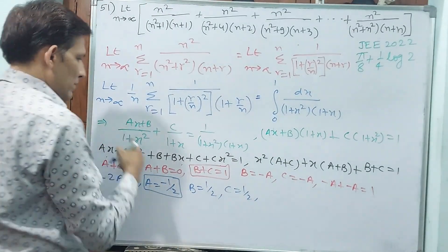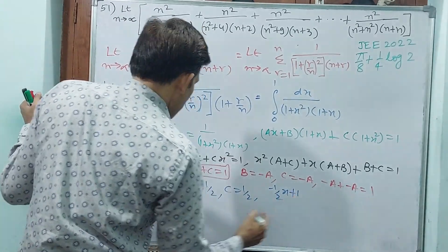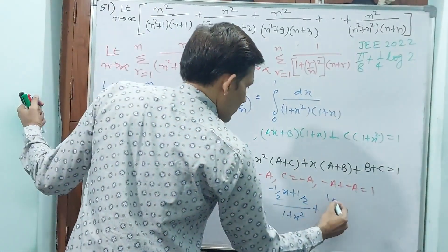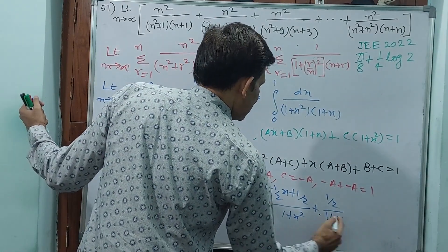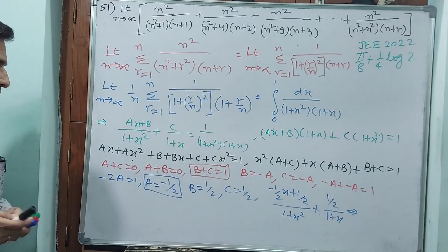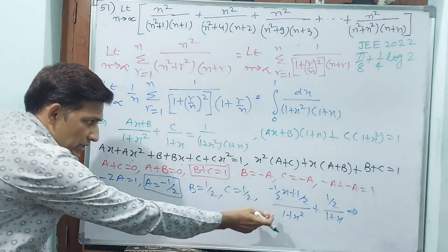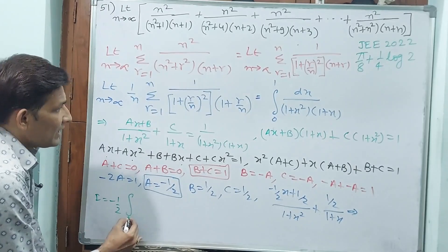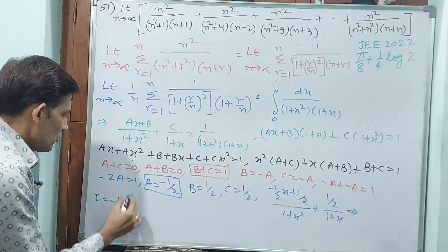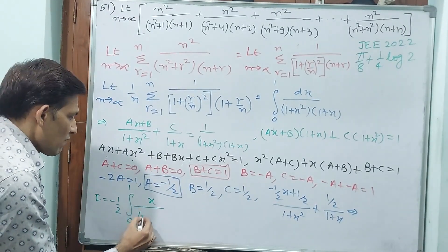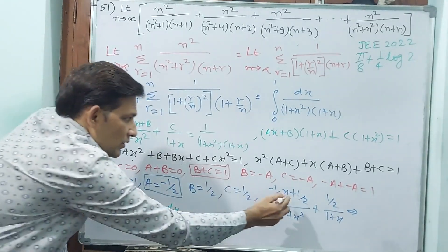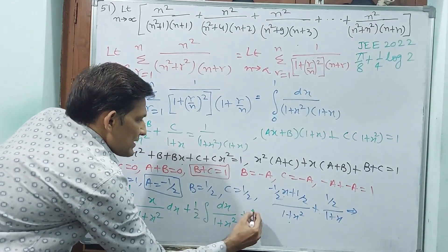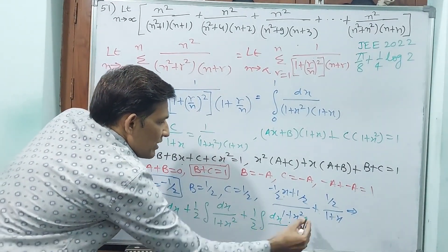So the integrand becomes: minus (1/2)x plus (1/2) by (1 plus x squared), plus (1/2) by (1 plus x). This gives: I equals minus 1/2 integral from 0 to 1 of x by (1 plus x squared) dx, plus 1/2 integral dx by (1 plus x squared), plus 1/2 integral dx by (1 plus x).